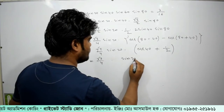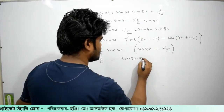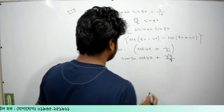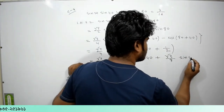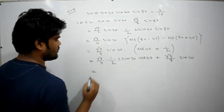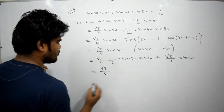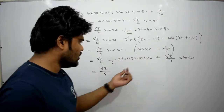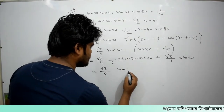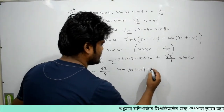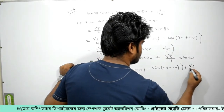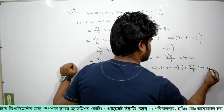So minus half, minus minus half, plus root 3 by 4. This gives us root 3 by 8, considering sin 20 and cos terms. We arrive at root 3 by 8, with sin 20 and minus 20 terms canceling out.